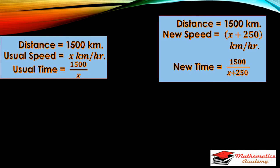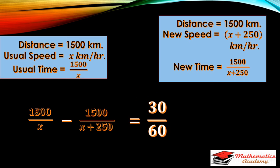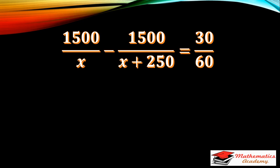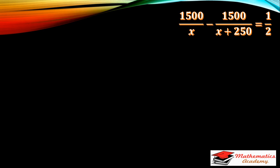The usual time is 1500 upon X, and the increased speed time is 1500 upon X plus 250. When we take the difference of these two times, we get 30 upon 60, as this is the time difference in hours. The equation becomes: 1500 upon X minus 1500 upon X plus 250 equals 30 upon 60.